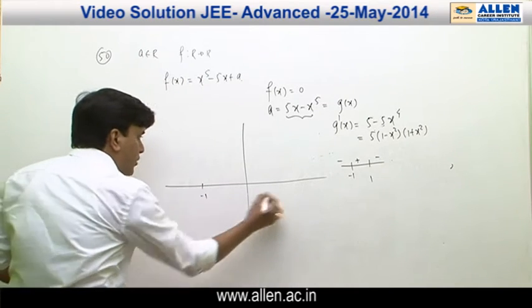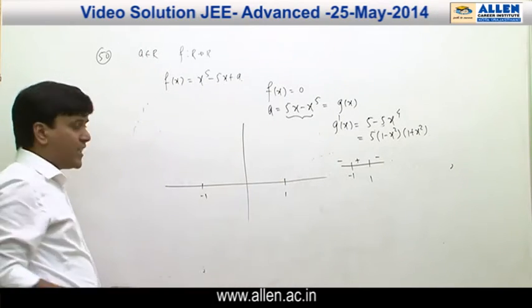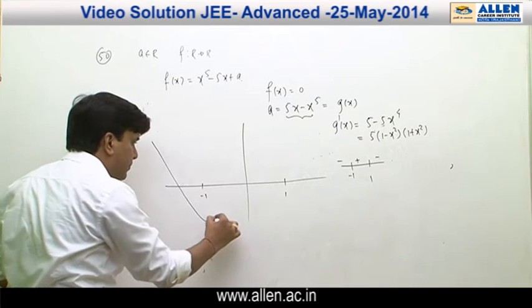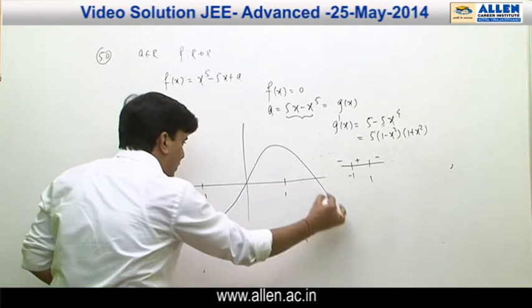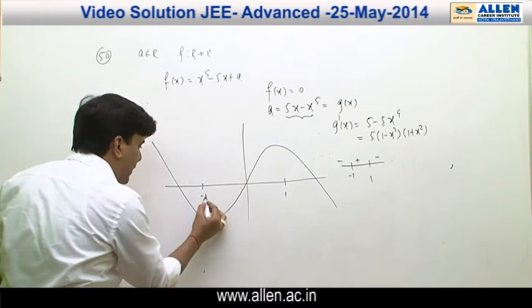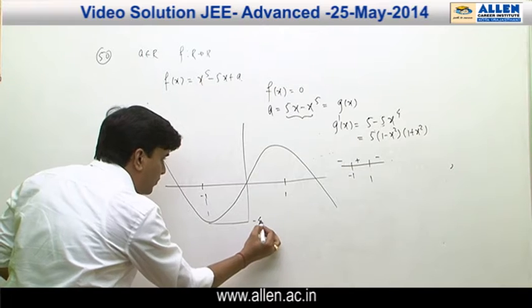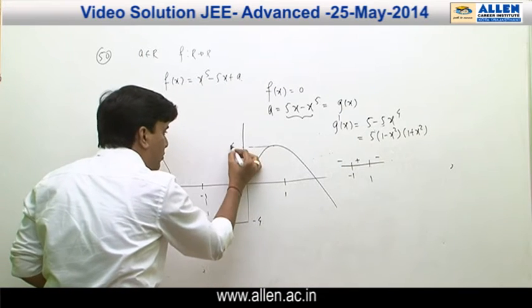So the graph of 5x minus x to the power 5 looks like this. The local minimum at x = -1 is -4 and the local maximum at x = 1 is 4.